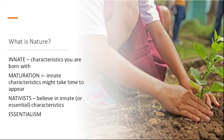Let's look at nature first. By nature, we're talking about the characteristics which are innate — the things you are born with. There's a distinction here about maturation: innate characteristics might take time to appear. As you grow, things emerge in your character that were always there — perhaps you had the genes for them, but they take a while to come out. People who believe in these innate or essential characteristics are called nativists, and this viewpoint is sometimes called essentialism.